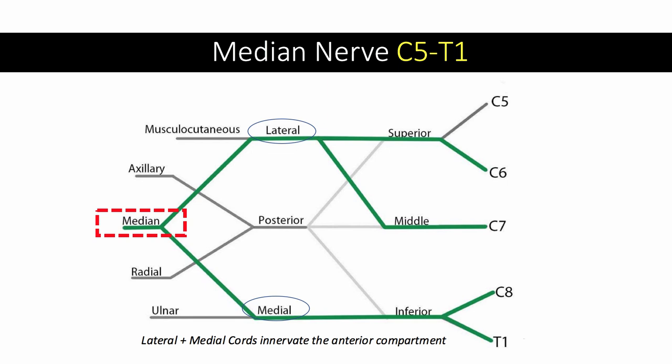The median nerve derives from the medial and lateral cords of the brachial plexus. These cords innervate the muscles of the anterior compartment of the arm. The median nerve is comprised of nerve fibers from C5 to T1. This nerve often gives students grief, but in the next few slides, I'll try to simplify it so nothing comes as a surprise on test day.